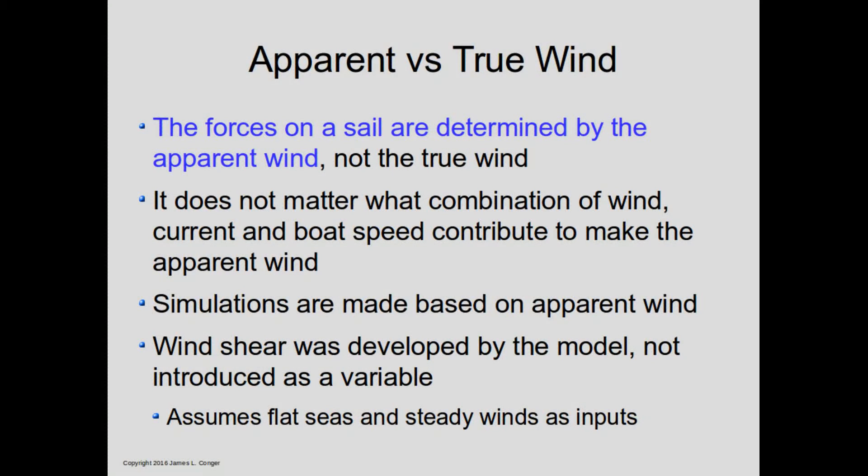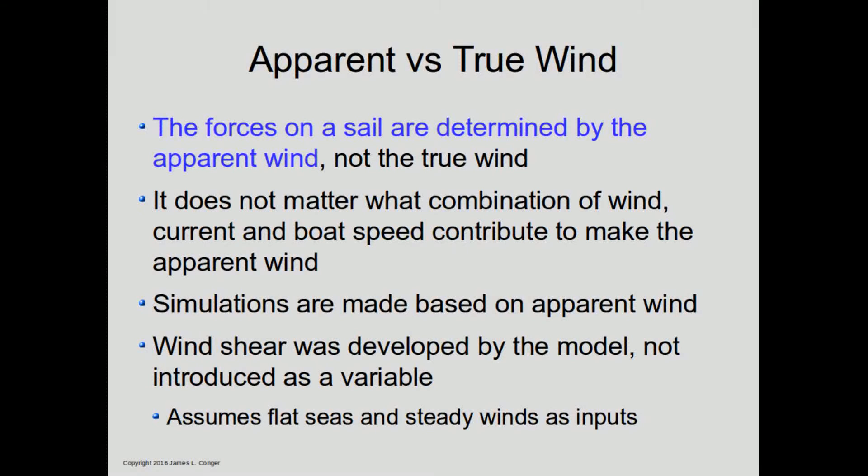Another fact of life with sails is that the forces on the sails are completely determined by the apparent wind and not the true wind that you would measure if you were stationary on the ground somewhere nearby. It really doesn't matter what combination of the wind, the current, and the boat speed add up to — whatever the apparent wind is, that's what drives your sails. So in almost all of the data you see here, wind will be expressed in terms of apparent wind, not true wind.